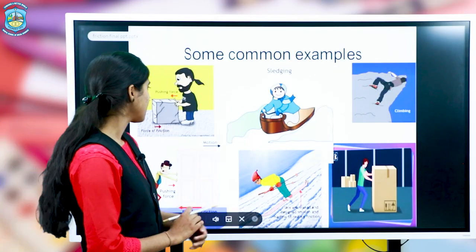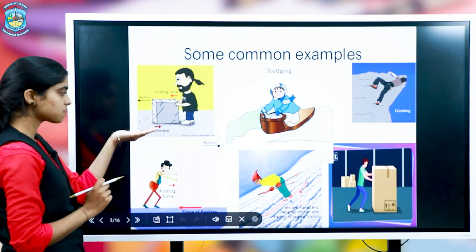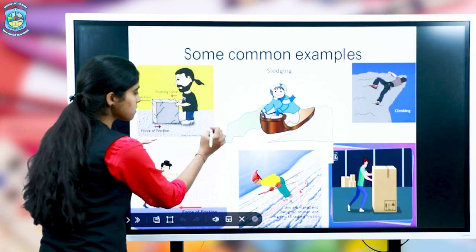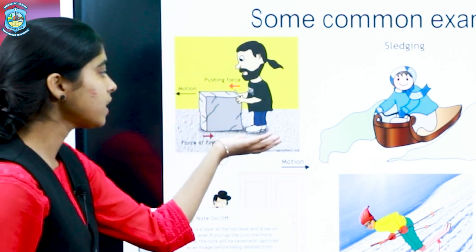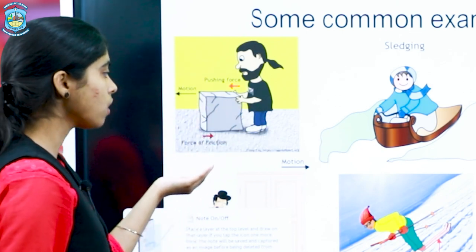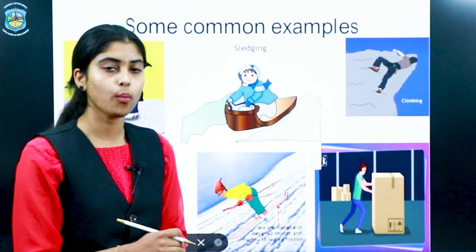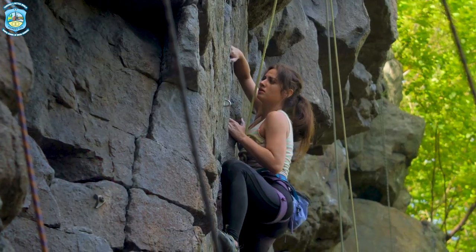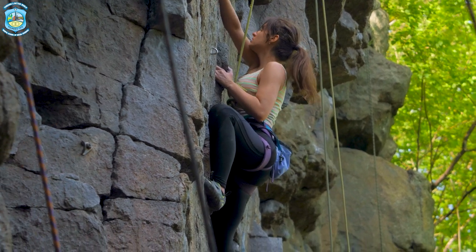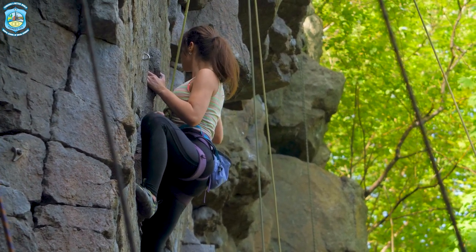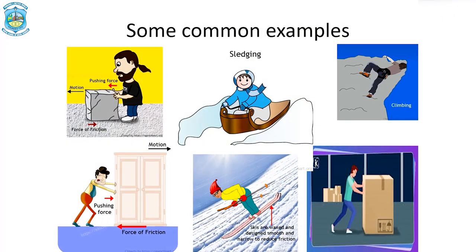Here are some common examples. In the first example, a man is pushing a box in one direction across a rough surface and finds it difficult to push. Why? Because the rougher the surface, the more will be the friction. When we talk about climbing, friction acts between the hands and the rock, which makes it easy for us to grip the rock so we do not slip.